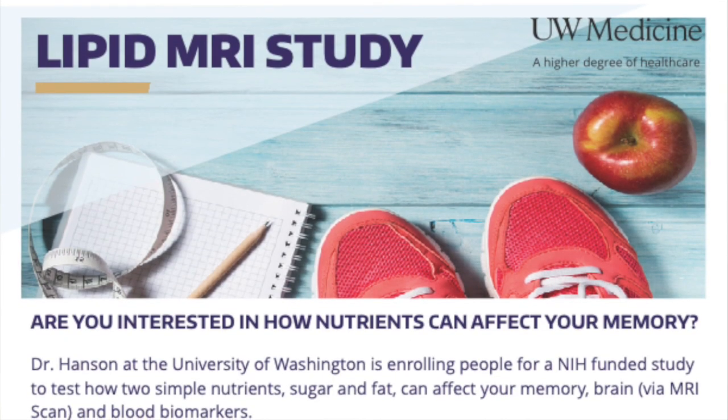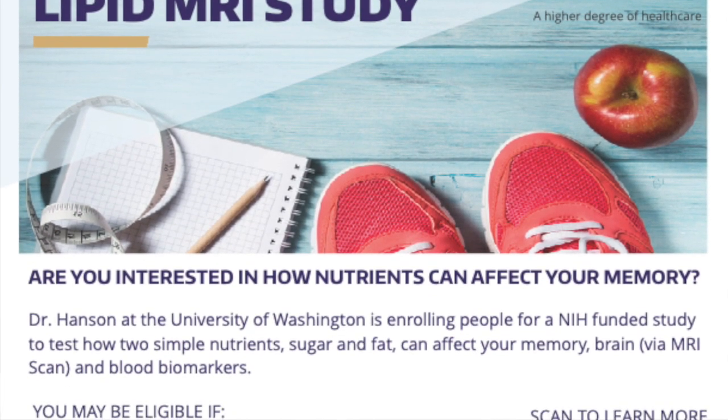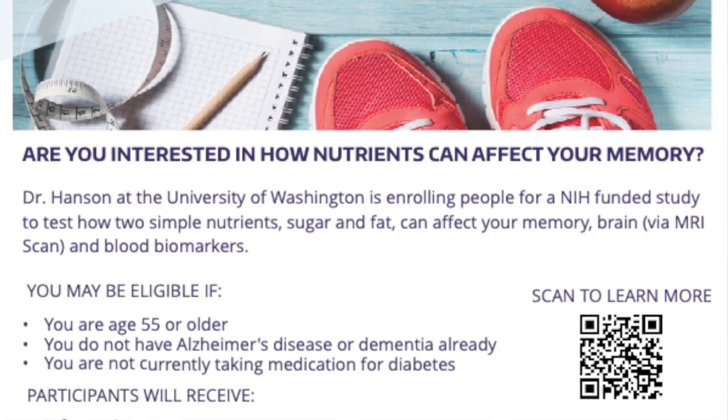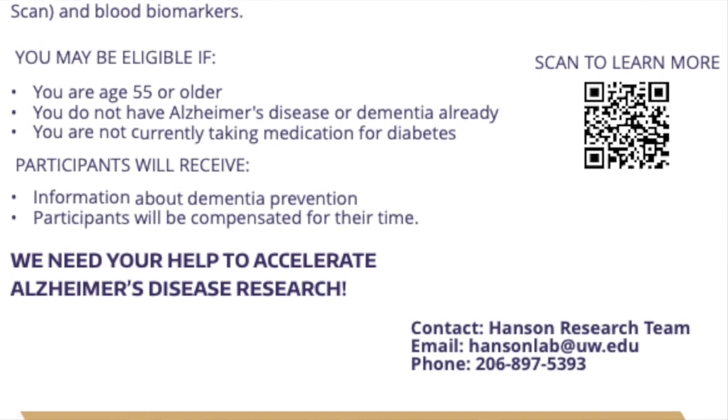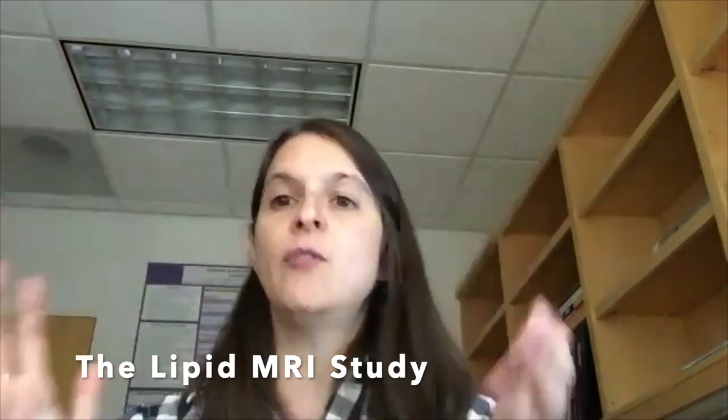It's called the Lipid MRI study. What it is, I bring people in, they drink a lipid drink that's about the same amount of fat as they would have got in the Meal and Memory study. It's actually heavy cream. So they drink heavy cream, and then we get a special kind of MRI called arterial spin labeling. What that is, it's non-invasive. It's a way to just see where your blood flow is, both global and then regional. We've run about six or seven people now through; the goal is 90. Our hypothesis is that E4 carriers, once again, will have a different blood flow response to the heavy cream than the non-carriers.